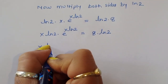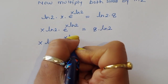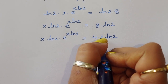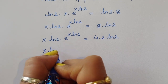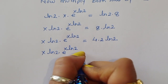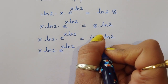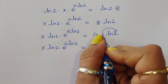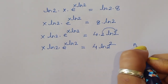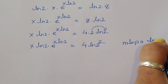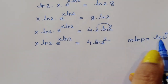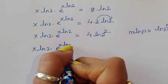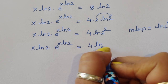Now the right side is 8 ln of 2, and we can write 8 as 4 times 2, so it becomes 4 times 2 ln of 2. Using the formula m times ln 2 equals ln of 2 power m, we get 4 times ln of 2 squared, which equals 4 ln of 4. So x ln of 2 times e power x ln of 2 equals 4 times ln of 4.